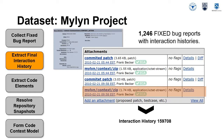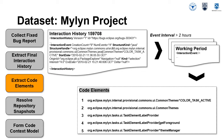Specifically, we extracted and used the last interaction history associated with each of these bug reports. As for the running example, we used the last interaction history 159708, which is a zipped .xml file. For code context models, we are interested in representing the models that developers usually keep in their minds as they work with code for a task.